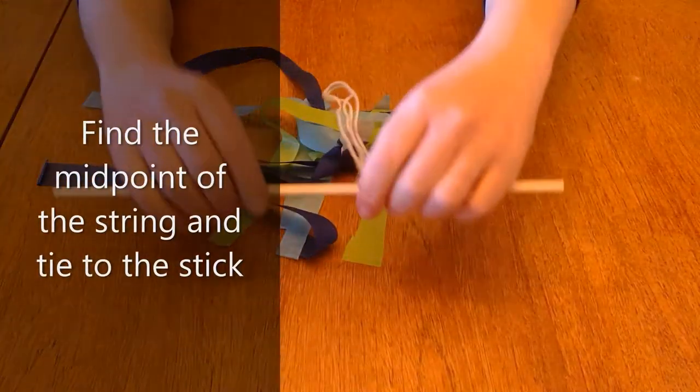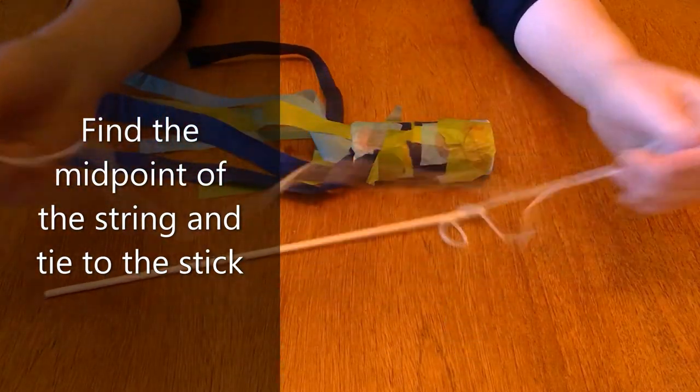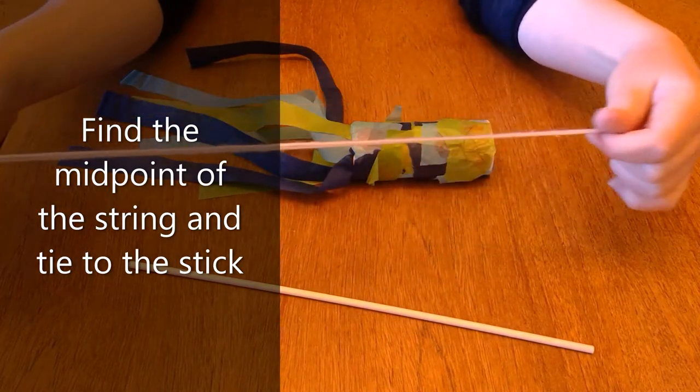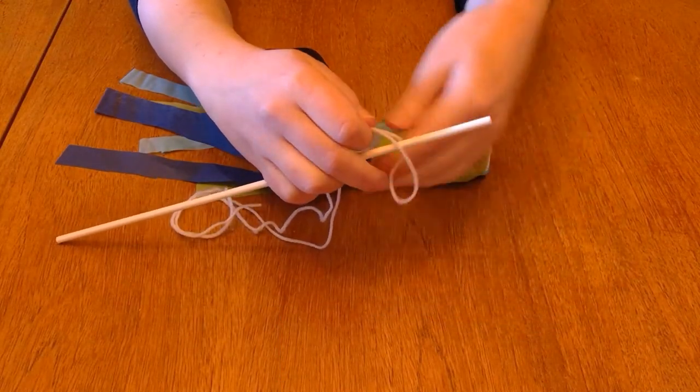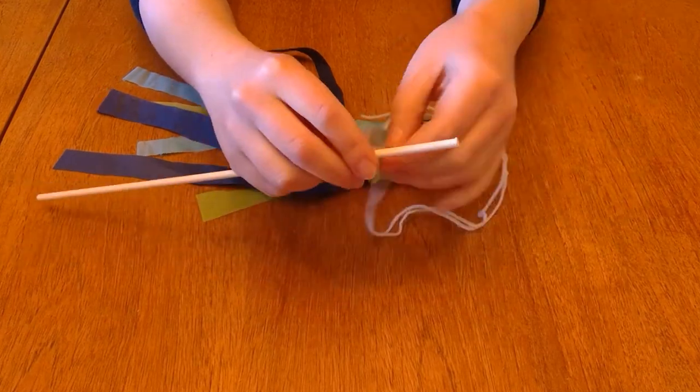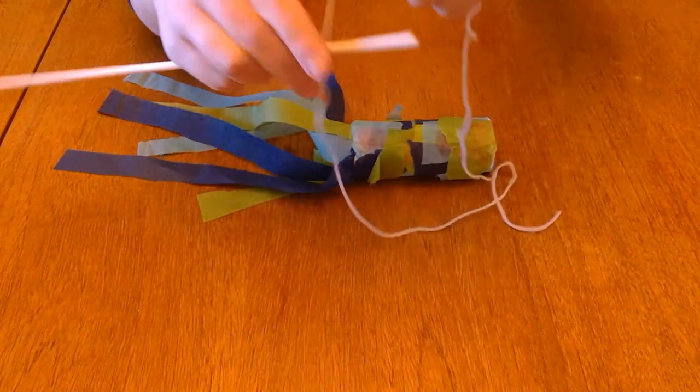Once that's done, they'll be able to flutter down and the wind will catch them on a breezy day. Now I just need to take my stick and my string. I'm going to fold that string in half to find the midpoint and wrap that around the stick a couple of times and then tie it off to make sure that it's secure.